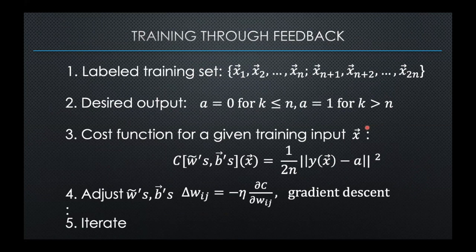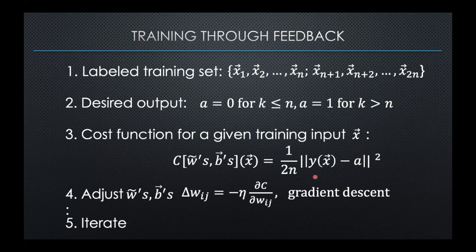We set the parameters of an artificial neural network the same way we set the parameters of a child's neural network. I cannot go in and set the weights and biases directly, but what I can do is give feedback. We start with labeled training sets — these are the conditions under which it's okay to eat, these are the conditions under which it's not. They go through their decision making, which leads to a particular output, and we compare that to the desired output and minimize the distance through stochastic gradient descent.